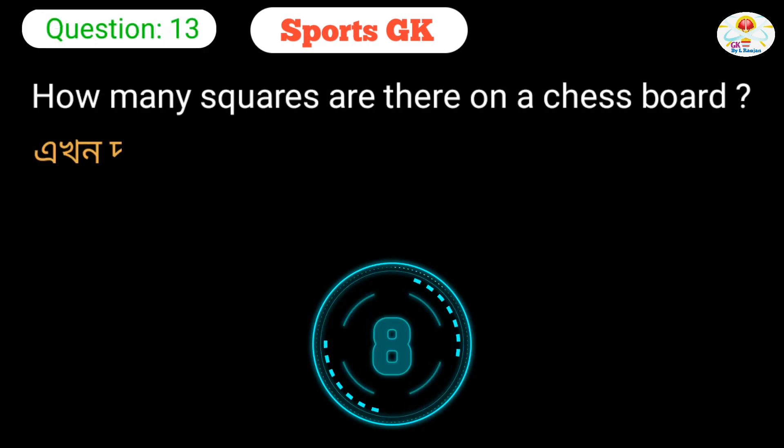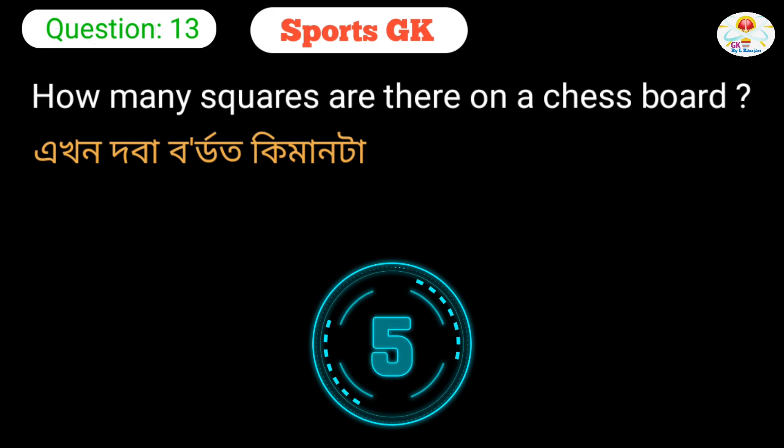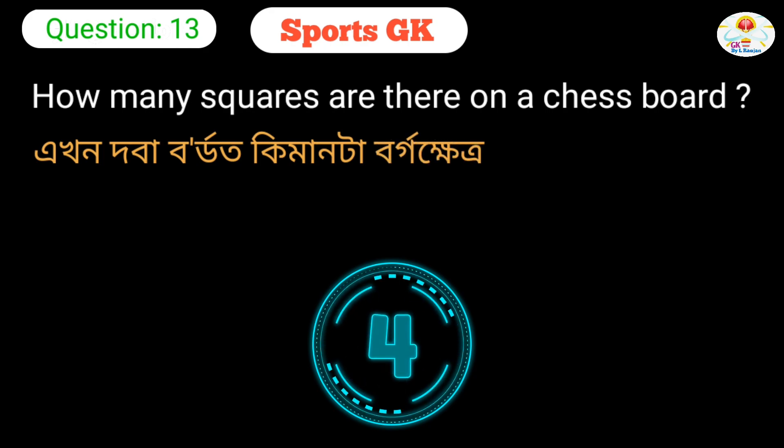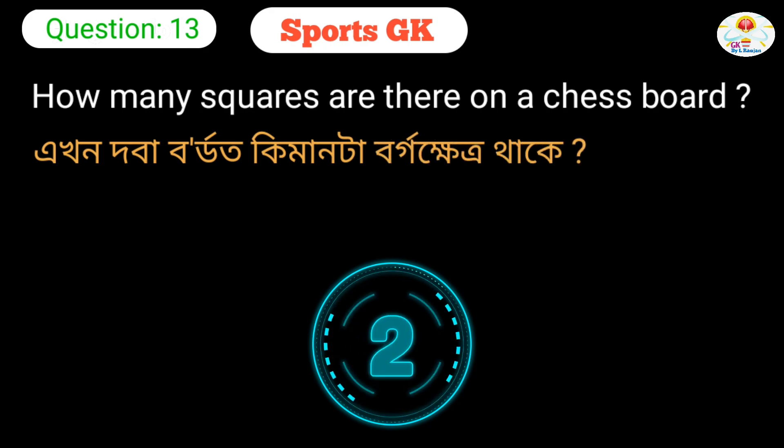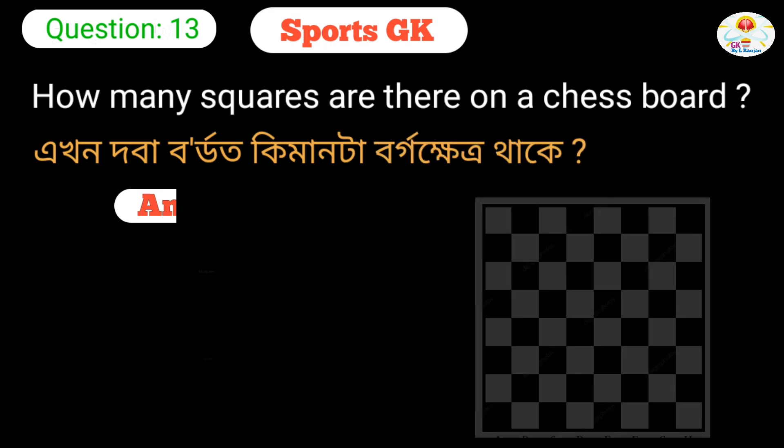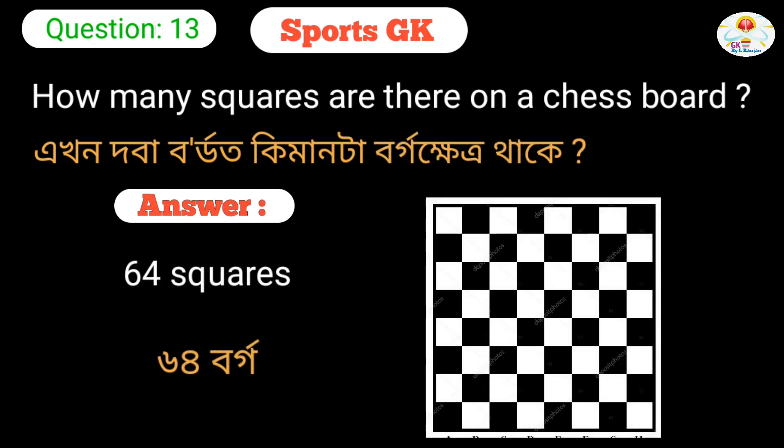Question 13: How many squares are there on a chess board? Answer: 64 squares.